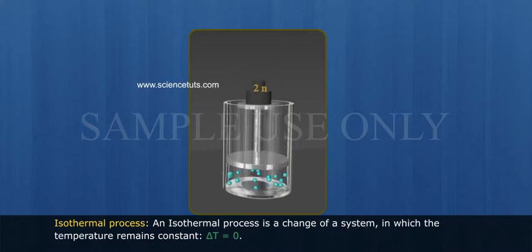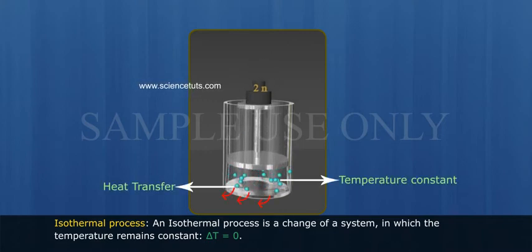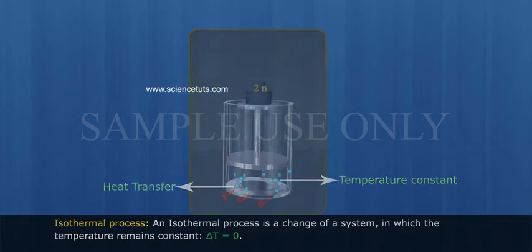Isothermal process: An isothermal process is a change of a system in which the temperature remains constant. ΔT equals zero.